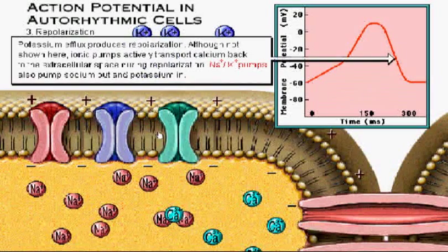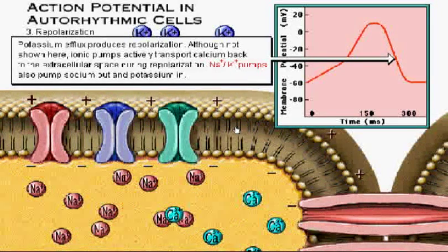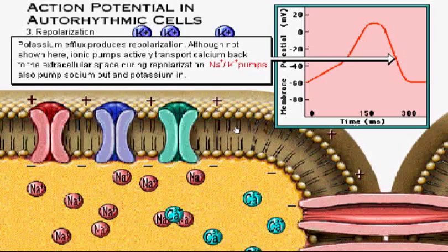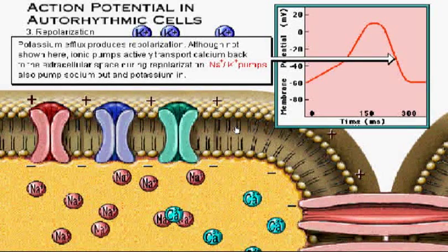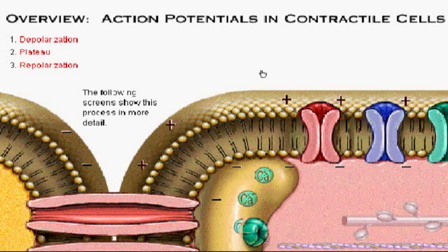Ou seja, o interior volta a ficar negativo e o exterior positivo. Como o potássio é um íon intracelular, existe um mecanismo ativo chamado bomba de sódio e potássio, que faz com que o potássio entre para a célula e o sódio volte para o exterior da célula. E a milivoltagem da célula volta aos menos 60 milivolts para um novo ciclo. A célula do marcapasso se despolarizou e, com isso, ela acaba enviando essa onda de despolarização para as suas células vizinhas.